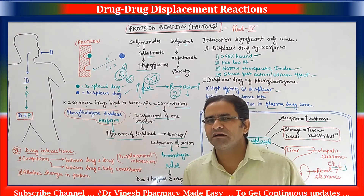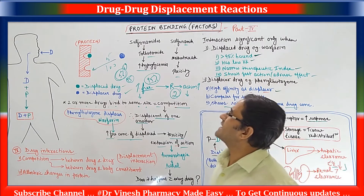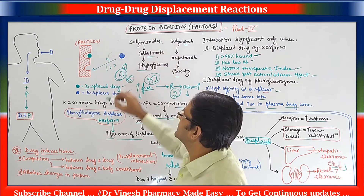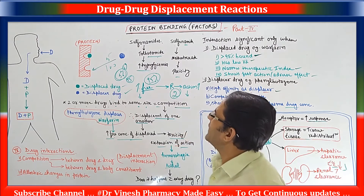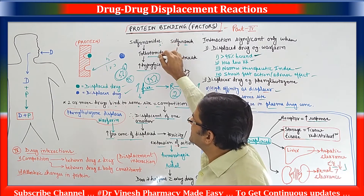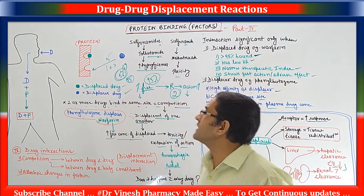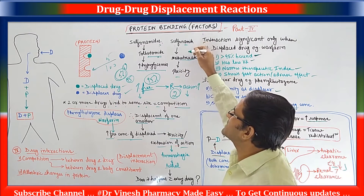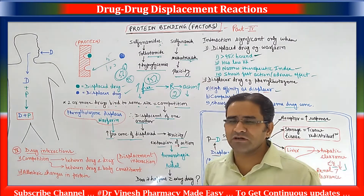Now let us see important drug interaction examples. One example we have already seen: phenylbutazone and warfarin. Second example: sulfonamide and tolbutamide. Tolbutamide is the displaced drug and sulfonamide is the displacer. The patient is already on the oral sulfonylurea tolbutamide, and when they take sulfonamide, due to high affinity, sulfonamide causes displacement of tolbutamide, increasing its concentration and therefore increasing pharmacological action — meaning increased hypoglycemia. Another example: a patient on methotrexate therapy who also takes sulfonamide. Methotrexate is displaced from the protein binding site, leading to increased methotrexate concentration and methotrexate toxicity.